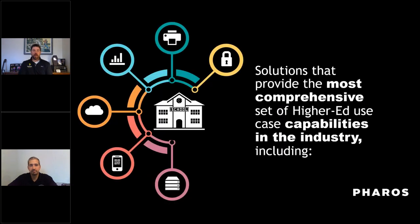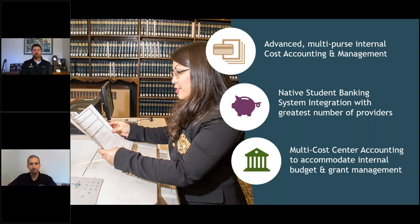As the products come along — approaching 30 years with the product now — Uniprint remains the most comprehensive, robust, scalable, flexible, and customizable print management application in higher education. That's reflected by our numerous customers ranging from small institutions with under 2,000 students all the way up to universities with over 100,000 FTEs. With Pharos having over 65% of campuses with 10,000 FTE or greater, that speaks volumes to the scalability, customizability, and reliability of the solution.